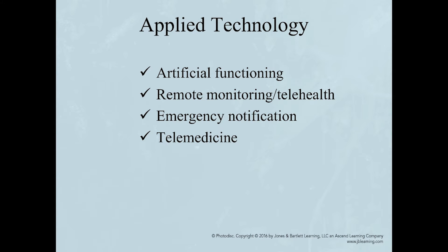When we talk about applied technology, this technology has much to offer in maintaining or improving a person's functional independence in several ways, including artificial functioning — devices to provide assistance from wheelchairs to robots. Emergency notification includes panic buttons to notify when help is needed. Telemedicine is remote monitoring of a consumer's condition, conferencing among healthcare professionals, and consultation with specialists.